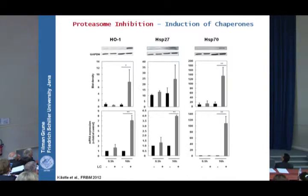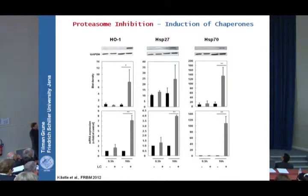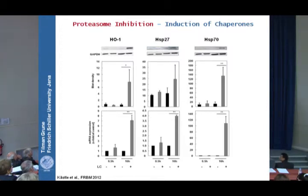We tested this also at the protein level and saw a dramatic induction of HO1, some induction of HSP27, and HSP70 inducible form also highly regulated due to stress. The question is how — how can inhibition of the proteasome induce a stress response?